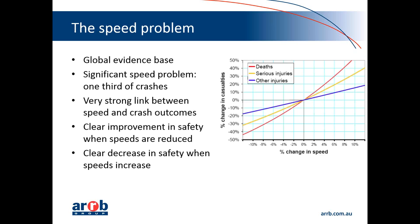In terms of the speed problem, it certainly is a global issue — it's a problem in every country. There is a global evidence base surrounding this issue, with very clear and firm evidence around the contribution of speed to crash risk. In most countries, we've looked at it as an issue where around about a third of fatal and serious crashes, speed is some sort of a contributor, whether it's traveling too fast for the conditions or traveling above the speed limit.